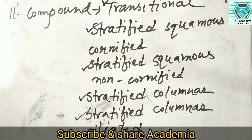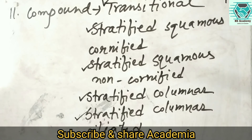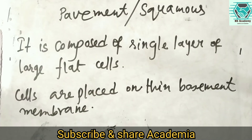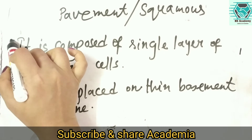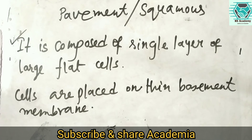Next, we will discuss each type of simple and compound epithelial tissue one by one. Starting with simple epithelial tissue, the first type is pavement or squamous epithelial tissue. The general features of this tissue are that it is composed of a single layer of large flat cells, and the cells are placed on a thin basement membrane.